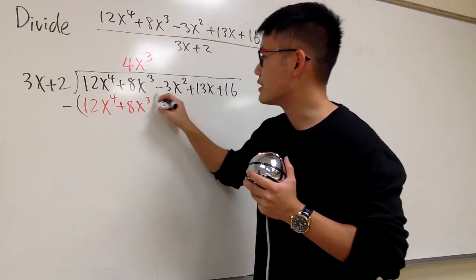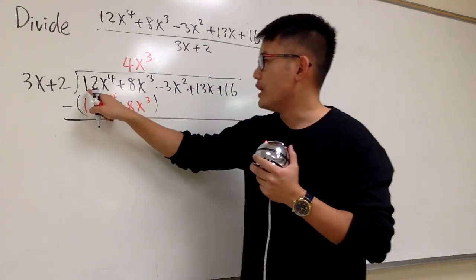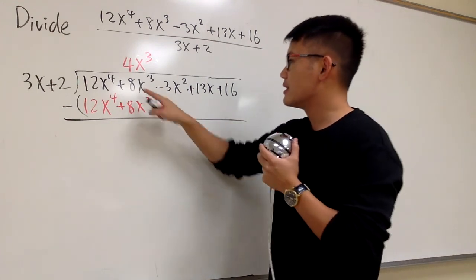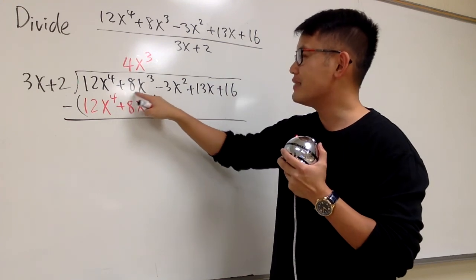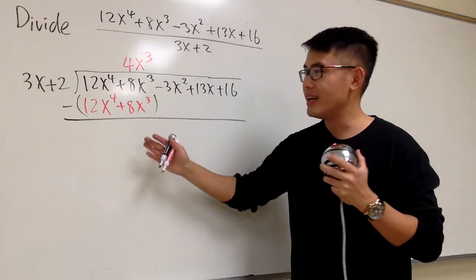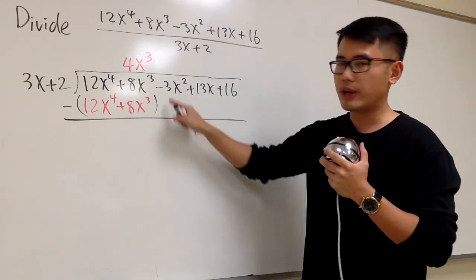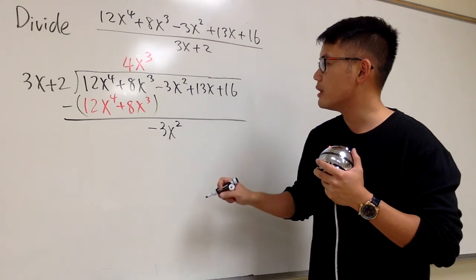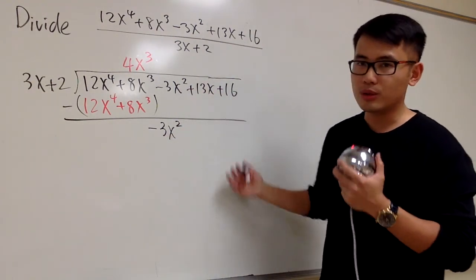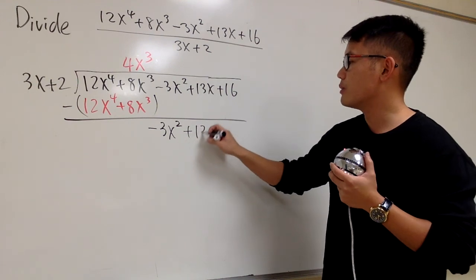When doing long division, we subtract — so put a negative and parentheses around it. We have 12x to the 4th minus 12x to the 4th, so they cancel out. Next, positive 8x to the 3rd minus another 8x to the 3rd — they cancel out as well. So for this part we have 0, and then we bring down negative 3x squared. Since we have two terms in the divisor, we also bring down the next term: plus 13x.